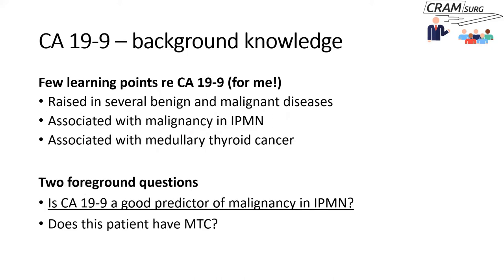The more you read, the more leads you get for further searches and the more you can refine your foreground question. I then started thinking about whether CA-19-9 is a good predictor of malignancy in IPMN. Given that this lady has IPMN and her CA-19-9 is raised, should I be worried? And the other question: does this patient have medullary thyroid cancer? Those were two further foreground questions to investigate.